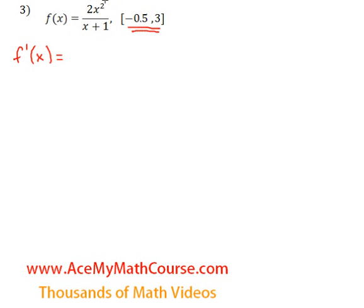So, let's take the derivative of the top function. The derivative of 2x squared is just 4x. We're going to multiply that by x plus 1. Then we're going to subtract 2x squared times the derivative of x plus 1, which is just 1. And we're going to have that all over x plus 1 squared.